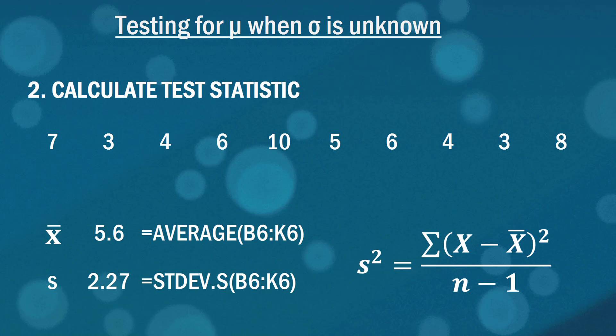The next step is to calculate the test statistic. Here's a list of the ten observations and each of those are hours. It's simple enough to calculate an average and I've just done that using Excel in that cell range B6 to K6. I've also calculated the standard deviation using Excel but it's possible to do this by hand and in doing so you'd be using this formula over here on the right.